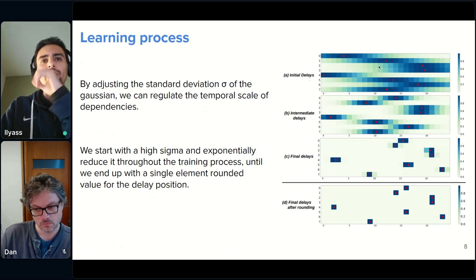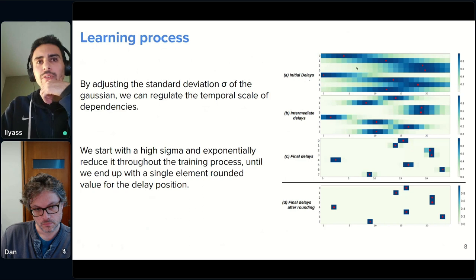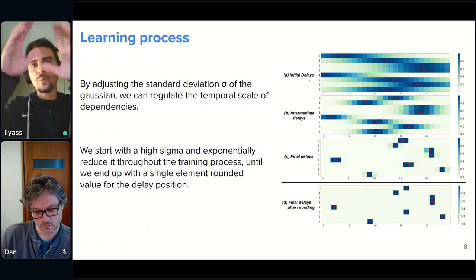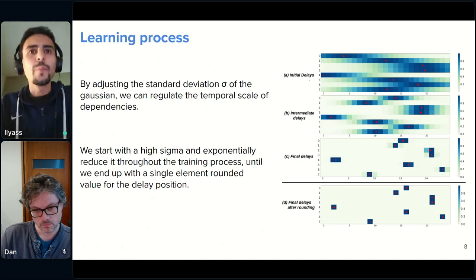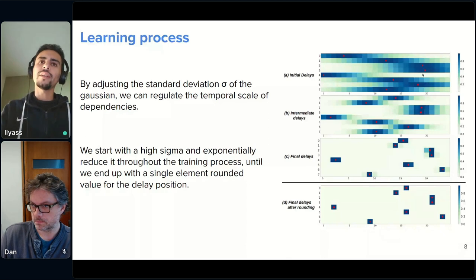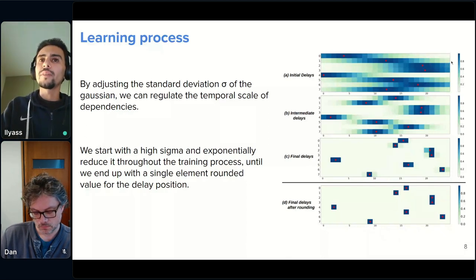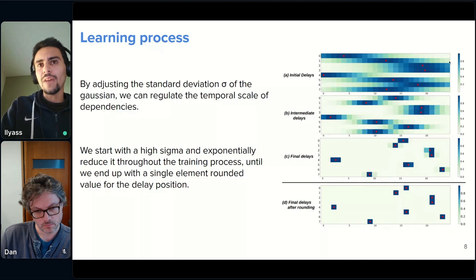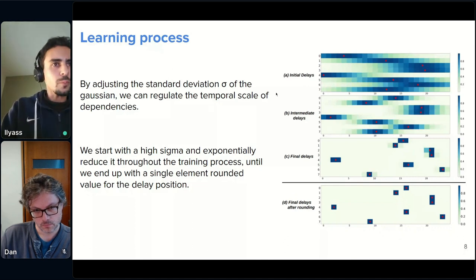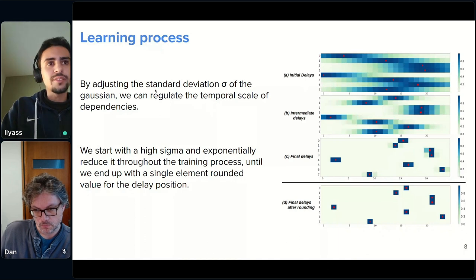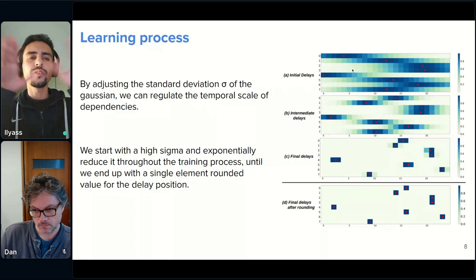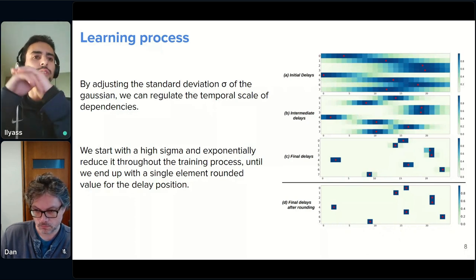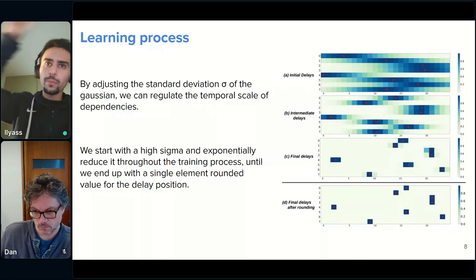So, now for the learning process, this first figure here shows what I was talking about, the Gaussian kernel. Now, instead of having just one non-zero element, we have a kernel where the weight is now distributed over all the time steps. And what this enables us to do is that, even if there is a temporal dependency that is far, if it's zero, we will have no gradient. But now, with this Gaussian kernel, we will have some gradient signals in every position, and it will allow us to move the position in the temporal kernel. An important parameter in this is the standard deviation of the Gaussian. So, what we do here is that we start with a large Gaussian, a high standard deviation, that will allow us to capture the long-term dependencies in the beginning of the training.